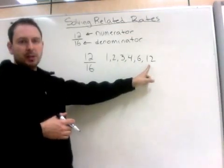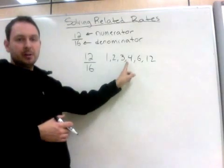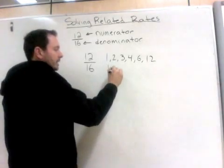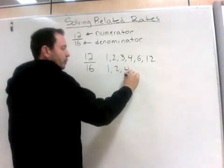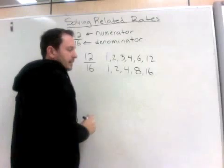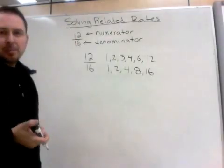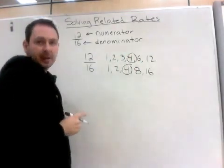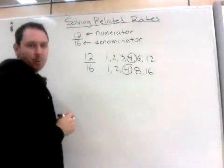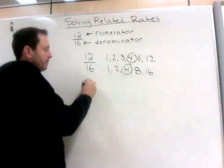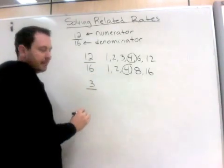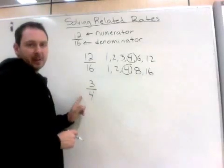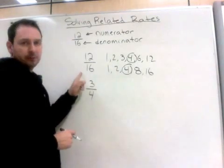1 times 12 is 12, 2 times 6 is 12, 3 times 4 is 12. And 16 would be 1, 2, 4, 8, and 16. Now the largest numbers these have in common is the 4. And if we divide both of these by 4, 12 divided by 4 is 3, 16 divided by 4 is 4. So 3 quarters is the simplified version of 12 over 16.